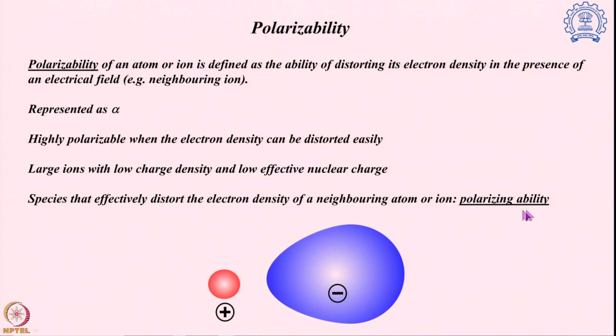On the other hand, if I have a very small ion with very high charge density and a very high nuclear charge, my electron density will be controlled very strongly — I cannot distort it easily, showing very low polarizability. However, a system that is less polarizable can have high polarizing ability because it can use its large charge density to control the electron density of neighboring ions. So the polarizing ability can be high when we have a less polarizable system, and high polarizable systems have less polarizing ability.